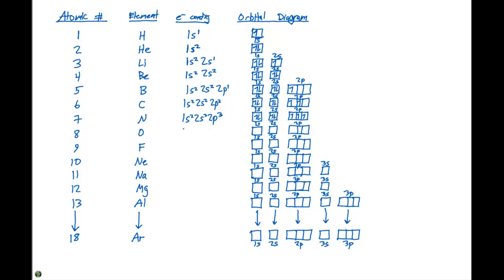For oxygen, we do 1s2, 2s2, 2p4, for a total of eight electrons. We fill in the 1s and 2s just as before. Then we have to put four electrons in the p orbitals — we fill all three spin up first, and then we have to put one electron spin down in that p orbital for oxygen.